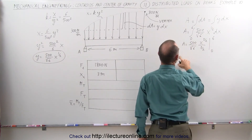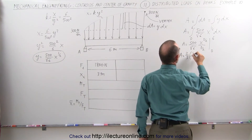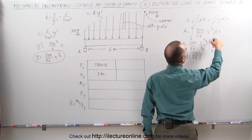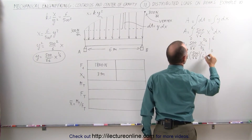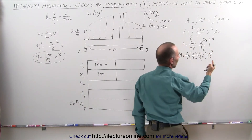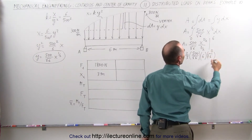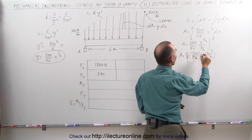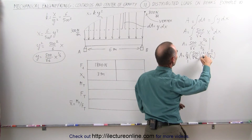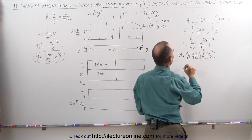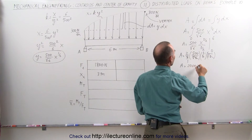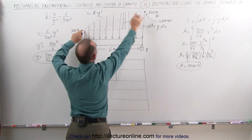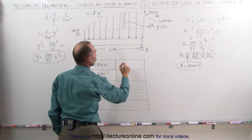Integrating, A equals (2/3) times 500 divided by the square root of 6, times x to the three-halves power, evaluated from 0 to 6. Substituting x equals 6, we get 6 to the three-halves power, which is 6 times the square root of 6. The square root of 6 cancels, the 3 cancels with the 6 to give 2, and 2 times 2 times 500 equals 2000 newtons. So the force contribution of the curved portion of the load is 2000 newtons.